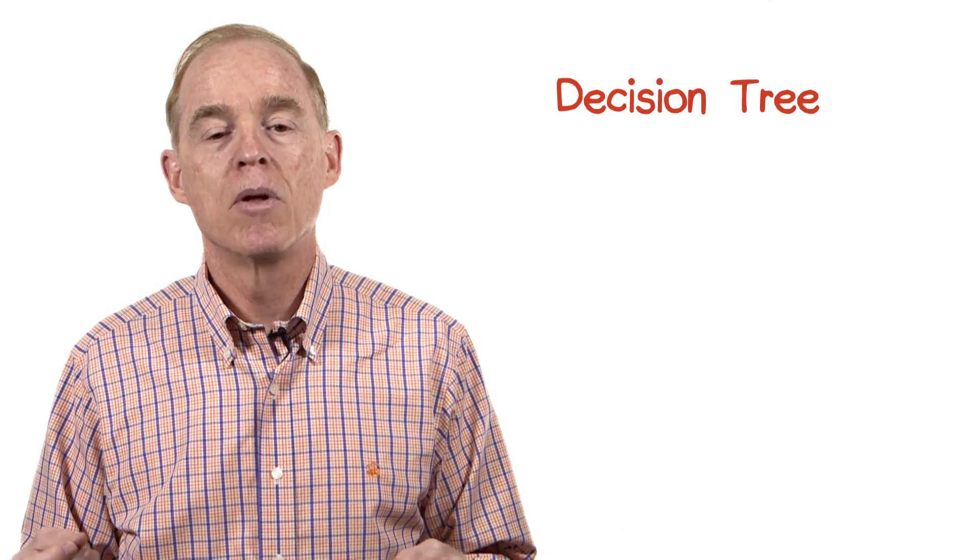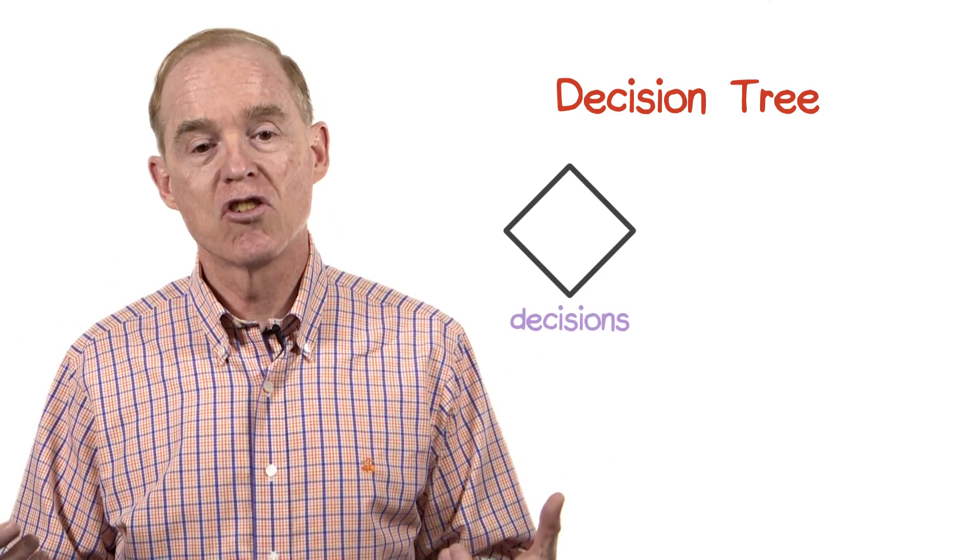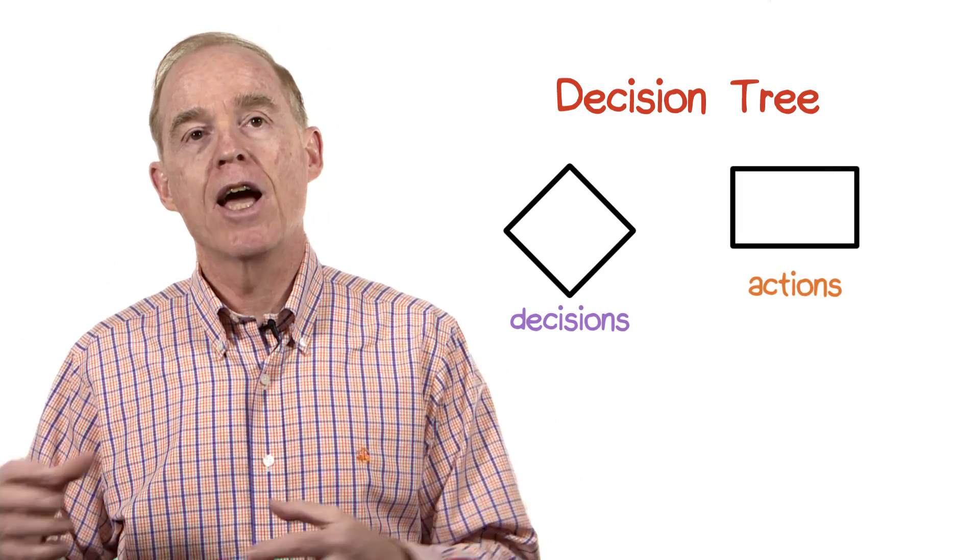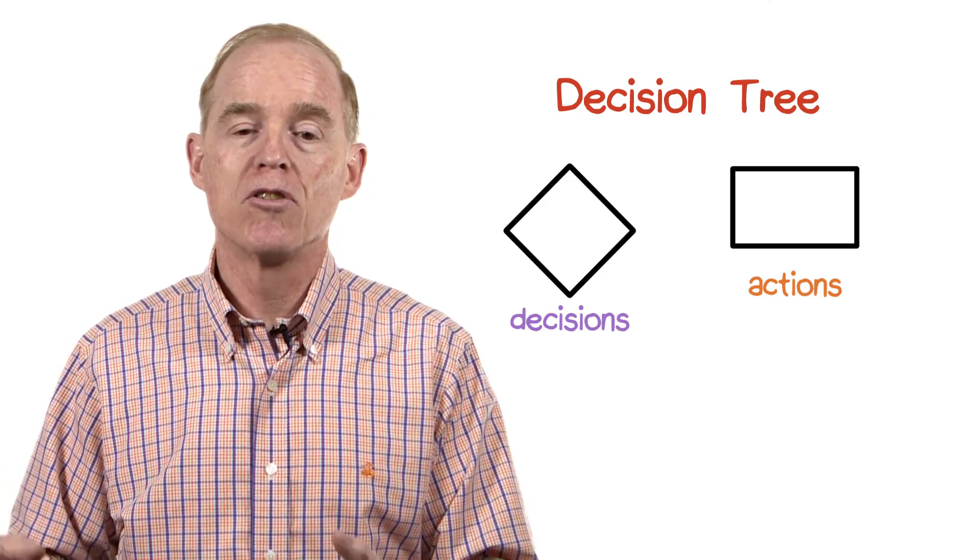It's exactly the same information as in the decision table, but you're seeing it in a different form. In the decision tree, there are two kinds of nodes. Diamonds denote decisions, and rectangles denote the actions that are going to be taken based upon the decisions that are made.